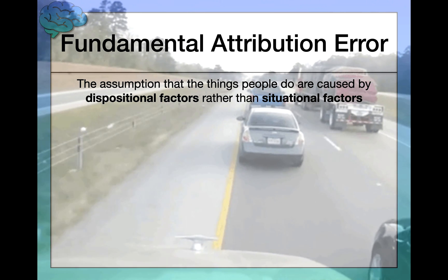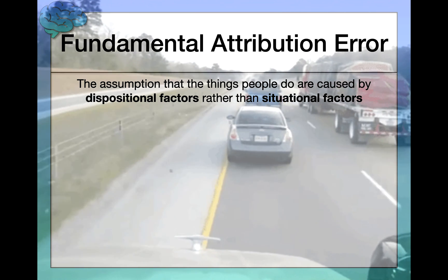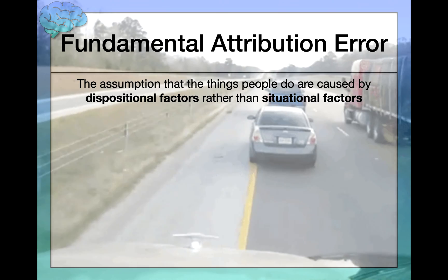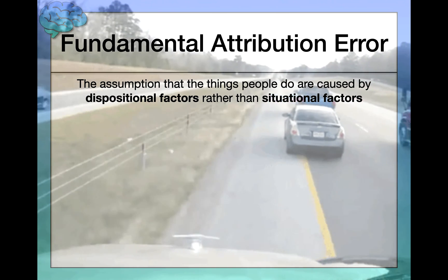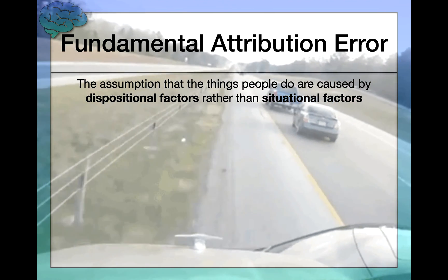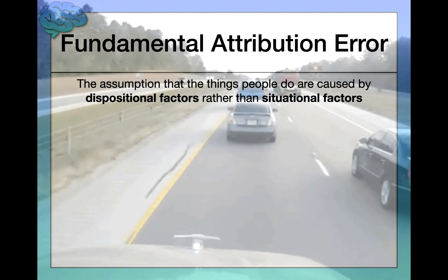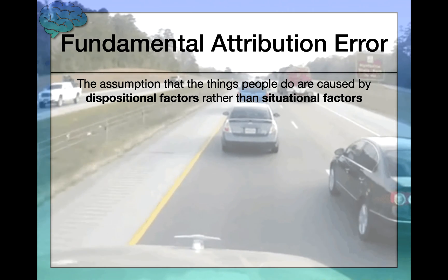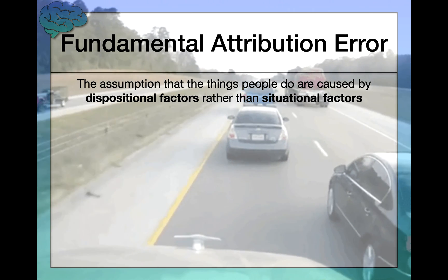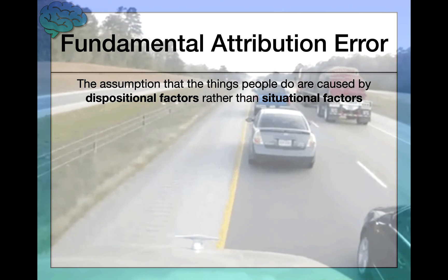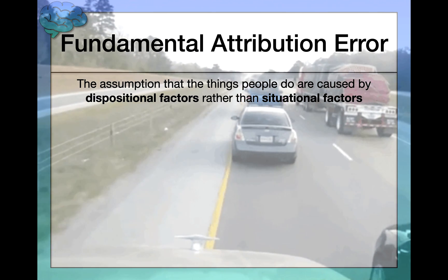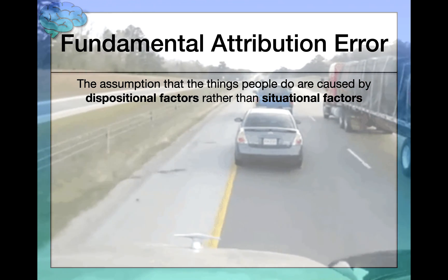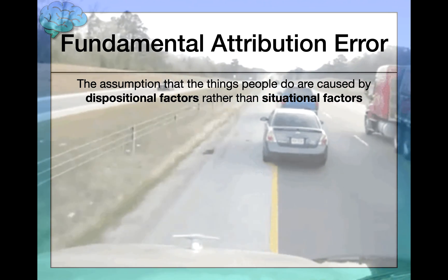The fundamental attribution error goes by another name: the correspondence bias, since people assume that an observed behavior corresponds to some internal quality of the person. Two different names referring to the same psychological construct.